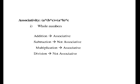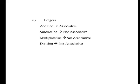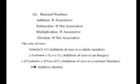The next property is the associative property. Associativity means a cross b into c equals a into b cross c. For whole numbers, addition and multiplication are associative, but subtraction and division are not associative. For integers, addition is associative, but subtraction, multiplication, and division are not associative. For rational numbers, addition is associative, subtraction is not associative, multiplication is associative, and division is not associative. Please check with examples for this property.